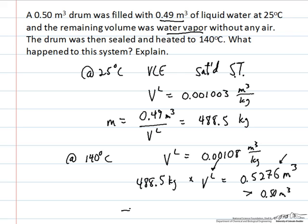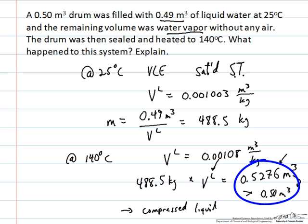Therefore, what forms in this system is a compressed liquid — a liquid compressed beyond its saturated state, at higher pressure than the saturated liquid. Since liquids are largely incompressible, we're looking at roughly a 4% required compression from the saturated liquid to the compressed state, which demands a very large pressure. If the drum is not rated to a sufficiently high pressure, the tank would potentially rupture.